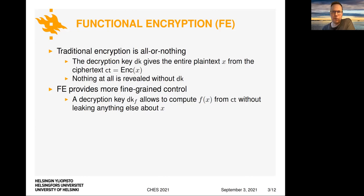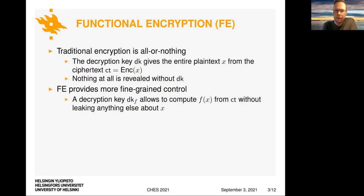Functional encryption, then again, provides more fine-grained control. So it's possible to hand out decryption keys that allow to compute a specific function from the ciphertext — a function of the plaintext when given the ciphertext. And this decryption key allows to compute this function, but doesn't give any other information about x.